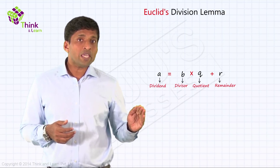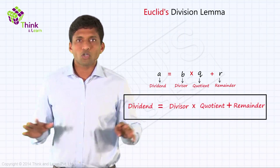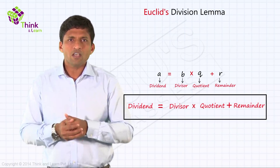And this is same as dividend = divisor × quotient + remainder. So there is nothing here. This is almost like fifth, sixth standard level, fifth, sixth grade level discussion.